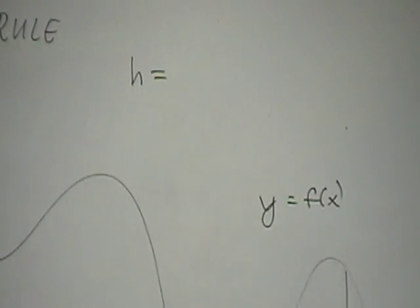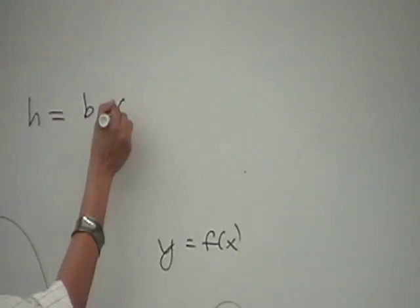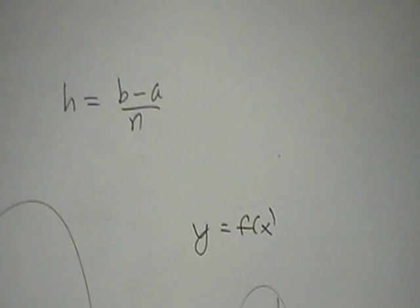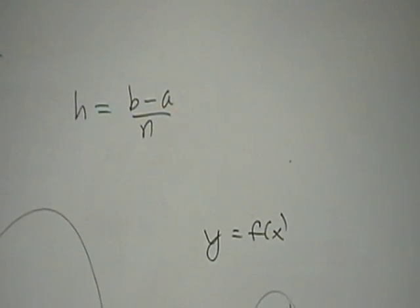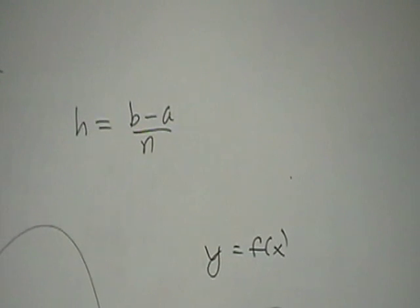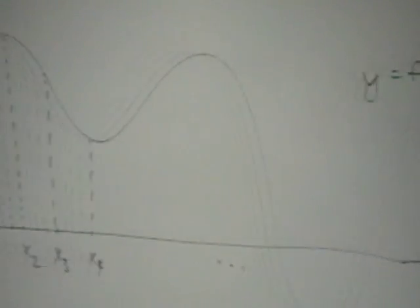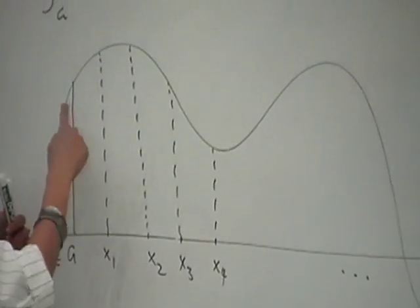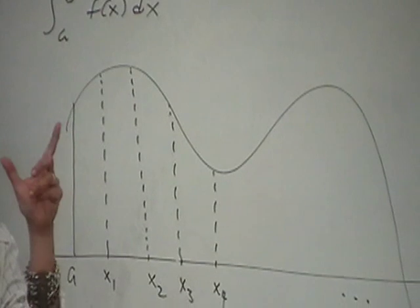The usual formula for finding h is the right endpoint minus the left endpoint divided by the number of subintervals you want to use. For the trapezoidal rule, we approximated the curve by a line. Now, for Simpson's Rule, what we want to do is approximate the curve by a parabola — segments of parabolas.